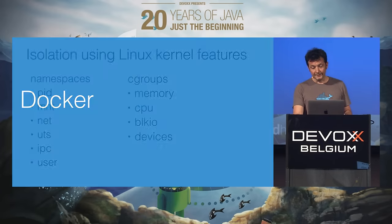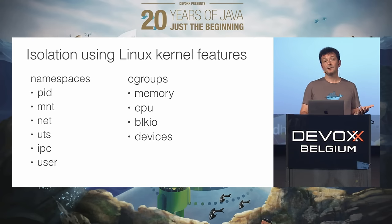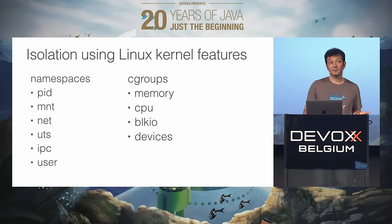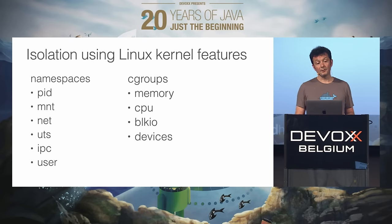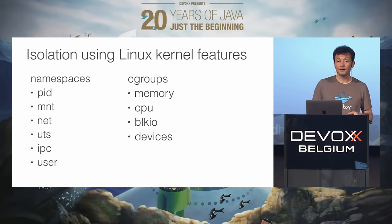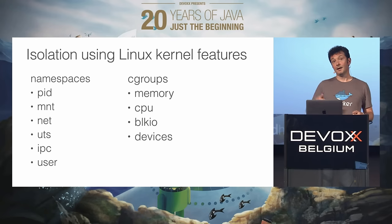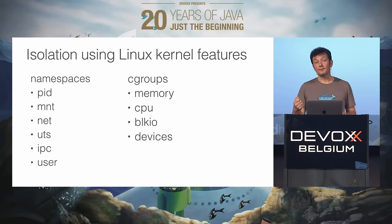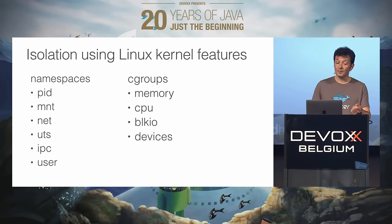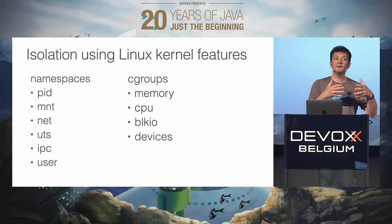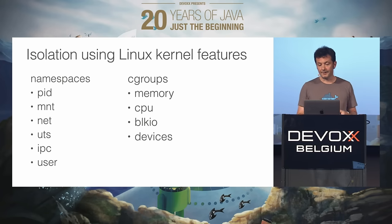Docker itself is basically a packaging of Linux kernel features for isolation and control. Namespaces give you isolation for your process, network, and mounts. Cgroups give you control over how much memory and how many CPUs a process has access to. Docker packages all of that in a simple-to-use user interface.